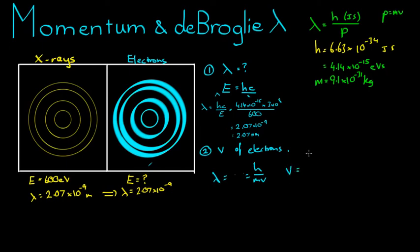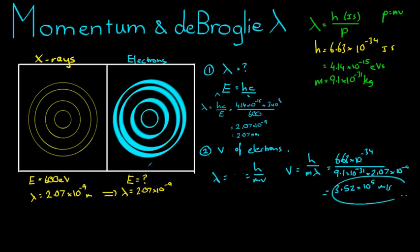Lambda, which is equal to 6.63 times 10 to the negative 34, going back to joules seconds now, you don't want to use electron volts when finding the velocity, divided by 9.1 times 10 to the negative 31 by 2.07 times 10 to the negative 9. I have that coming to 3.52 times 10 to the 5. Now remember the speed of light is around 3 times 10 to the 8. This is less than the speed of light, and that gives me some comfort in my answer. If you get an answer that's greater than the speed of light, then you know you're in a bit of trouble. So now we have the velocity of the electrons.